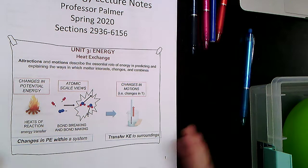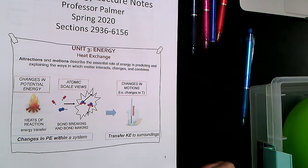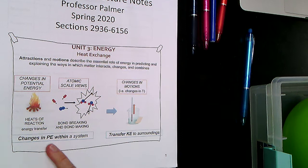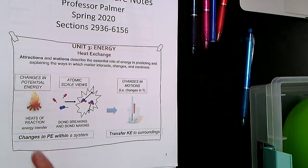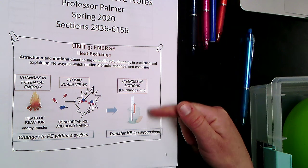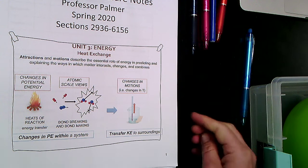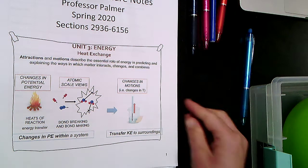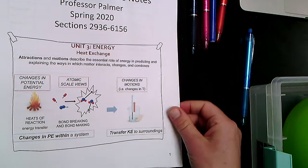This is a picture of the big ideas for the unit. What we're building up to is understanding potential energy and how it relates to attractions and repulsions. We'll be thinking about how changes in potential energy or changes in bonding lead to changes in kinetic energy in the surroundings. This will be an overarching picture you can come back to in the unit.